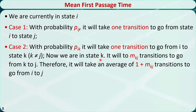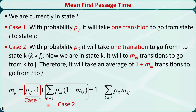Then, from there we calculate the expected number of transitions from state k to state j, which is denoted by mkj. It will take an average of 1 plus mkj transitions to go from i to j. Therefore, the mean first passage time from i to j is equal to 1 transition times the probability, plus the sum of 1 plus mkj transitions times the corresponding probabilities. It can be simplified to this form.